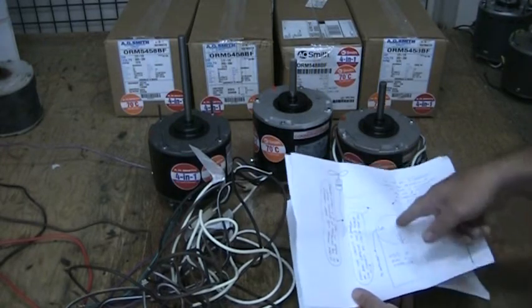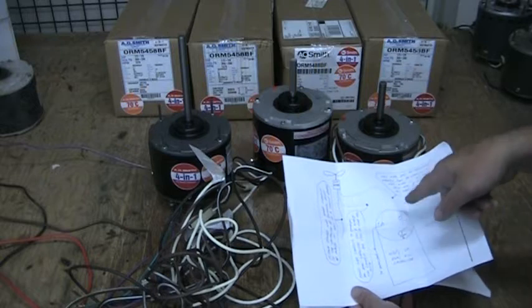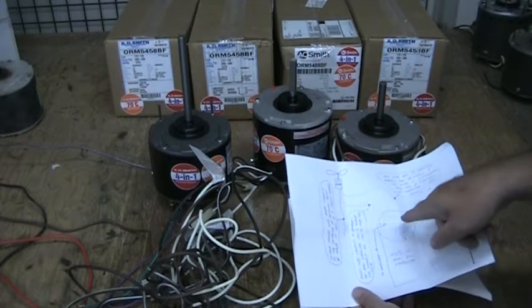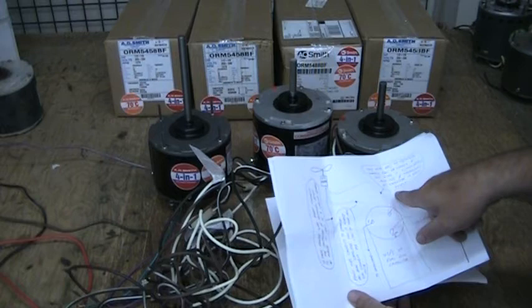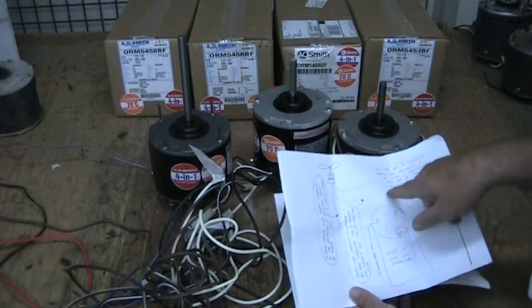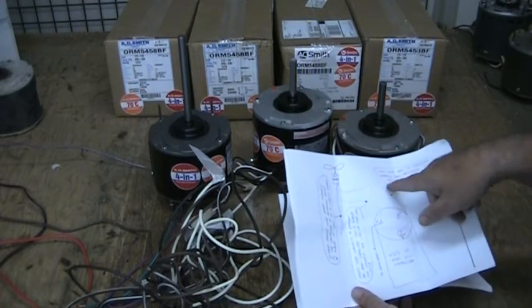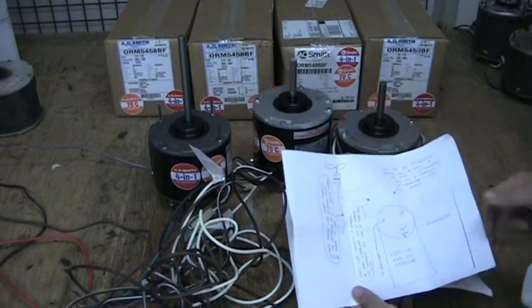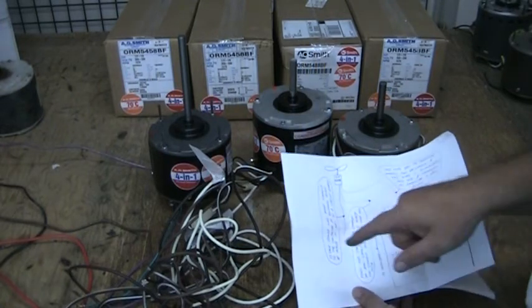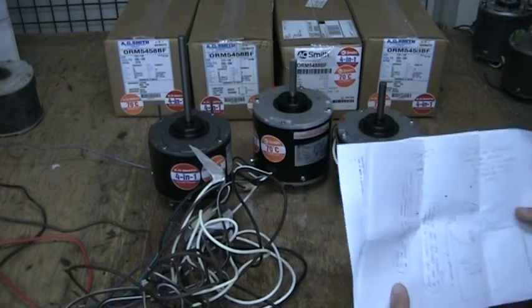And this is the setup where you have the dual capacitor, and you have your little terminals and they're marked, hermetic common fan, and you have these little bubbles that tell you, this is the fan terminal, whatever. And you can find your appropriate wires and hook up your new motor without any trouble.